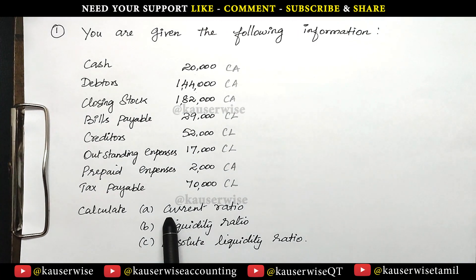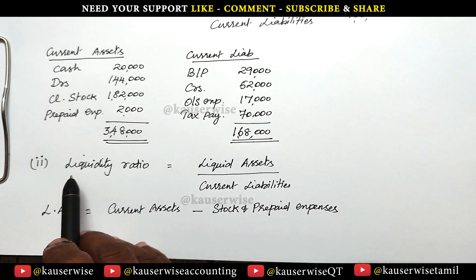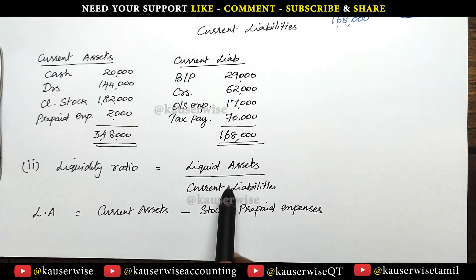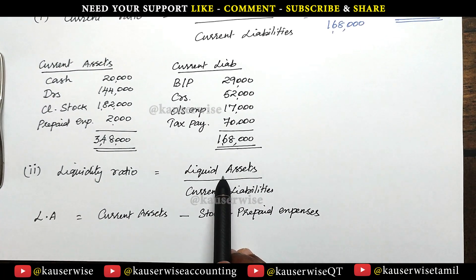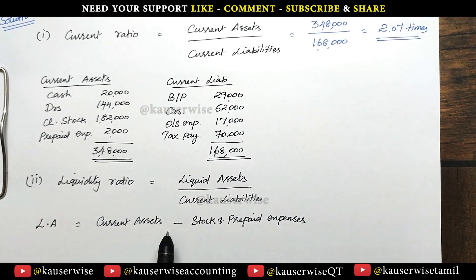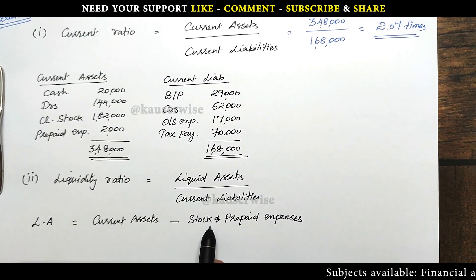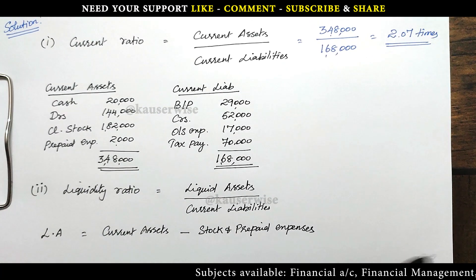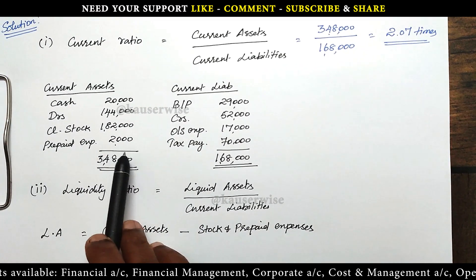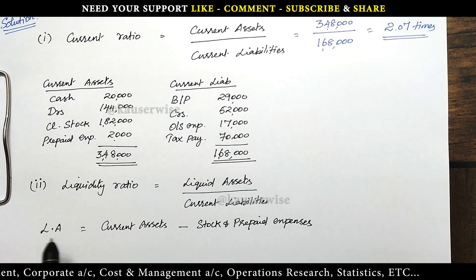We have calculated current ratio. Now we are going to calculate the second one — liquidity ratio. The formula is liquid assets divided by current liabilities. There is a difference between liquid assets and current assets. Liquid assets equals current assets minus stock and prepaid expenses. In our problem we have closing stock as well as prepaid expenses, so we subtract these two figures to find the liquid assets.